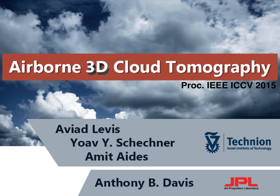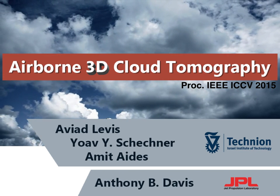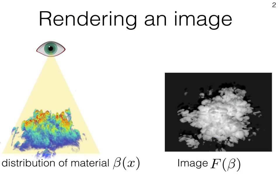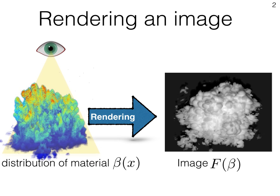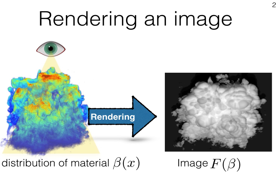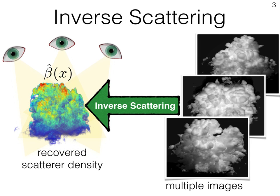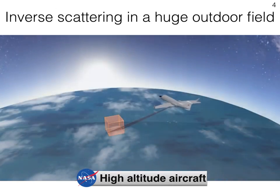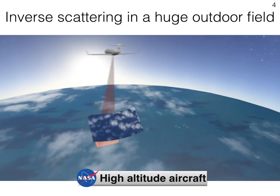This is a presentation of the paper Airborne 3D Cloud Tomography by Aviad Levis, Yoav Schechner, Amit Aydes and Anthony Davis. Let's start with a familiar concept: rendering. Rendering uses a distribution of material, denoted here by beta, to produce images, denoted here by f. We on the other hand seek inverse scattering, using multiple images to recover the scatterer density, beta hat. Basically, we want to know how dense is this volume at every point. We do it in a huge outdoor field, acquiring multi-view images from a high altitude aircraft.